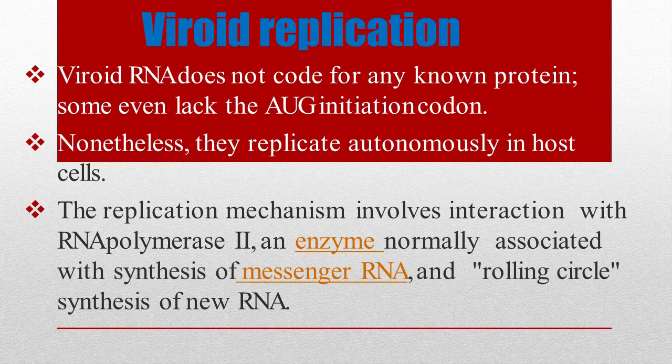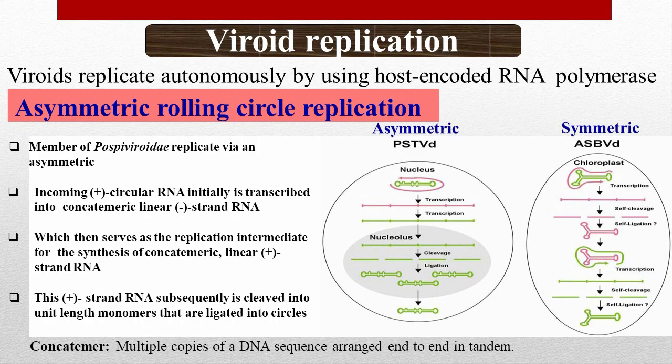Now let's talk about viroid replication. Viroid RNA does not code for any known protein, and some even lack the AUG initiation codon. Nonetheless, they replicate autonomously in host cells. The replication mechanism involves interaction with RNA polymerase II, an enzyme normally associated with synthesis of messenger RNA, and rolling circle synthesis of new RNA. Viroids replicate autonomously by using host-encoded RNA polymerase.